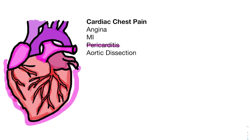A lot of times when we see pericarditis, it's usually because the patient had a viral illness prior to that, which causes inflammation of that sac. Other things that can cause inflammation include bacterial infections. Cancer can invade into the pericardium causing inflammation. Autoimmune disorders can too — those are when your own body's antibodies attack itself. All of these things that cause inflammation of this lining will cause pericarditis.